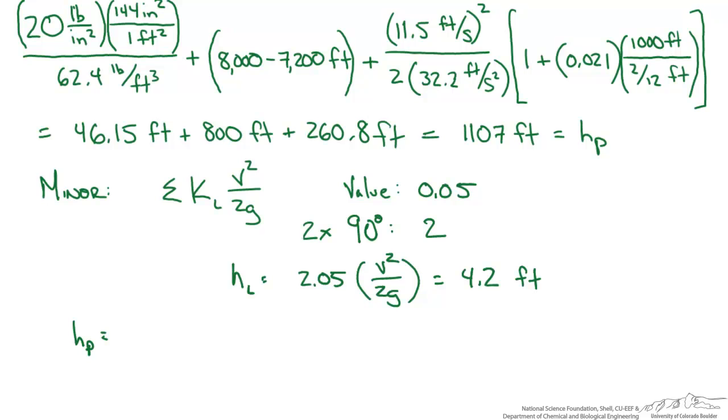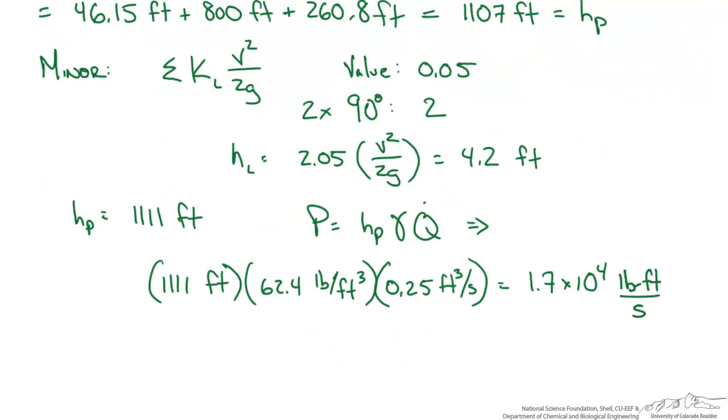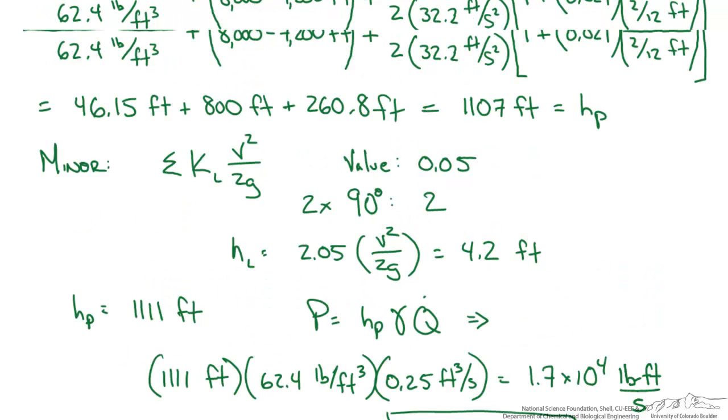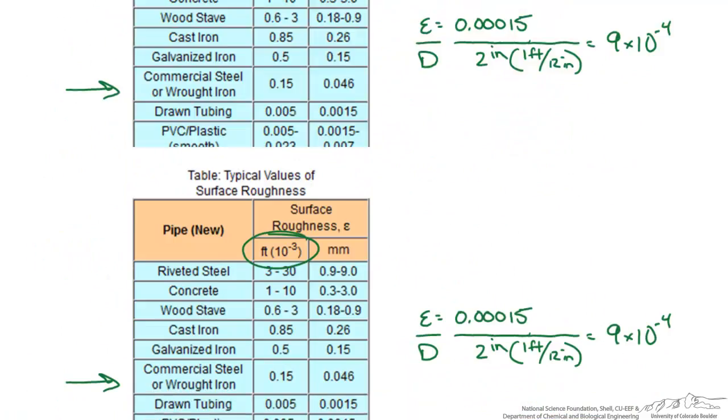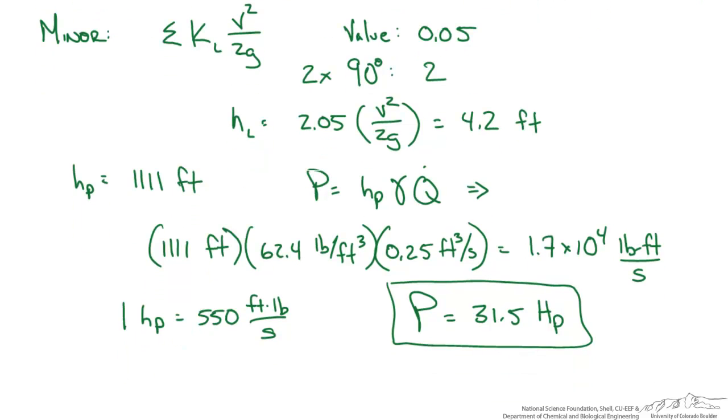We could account for this just to be more accurate. Our total shaft head necessary from the pump is about 1,111 feet. We put this into our equation for power, which shows that the shaft head multiplied by the specific weight of the fluid and volumetric flow rate gives us 1.7 × 10⁴ pound-foot per second. Converting to horsepower, our total pump power is 31.5 horsepower. We go back to our original problem statement and can safely say we've calculated the power added by the pump.